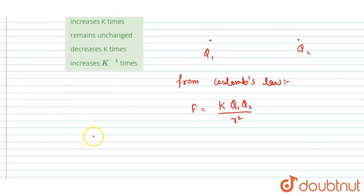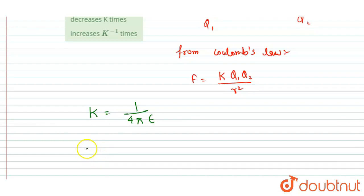And we know that the k here is equals to one upon four pi epsilon. So if I talk about the epsilon, epsilon is the permittivity of the substance or the medium.